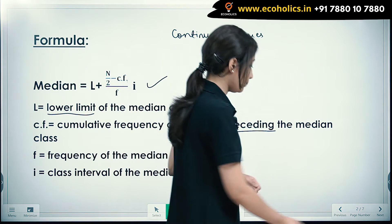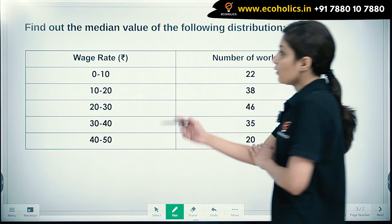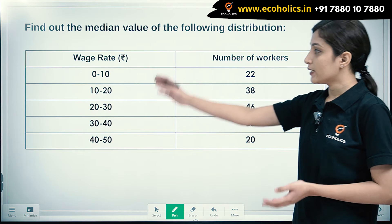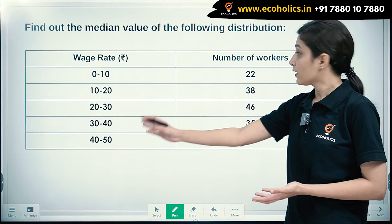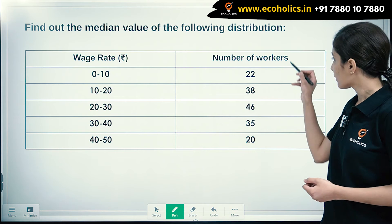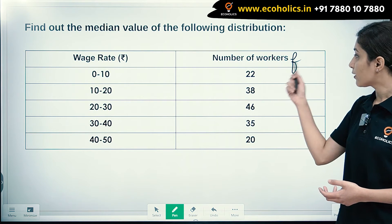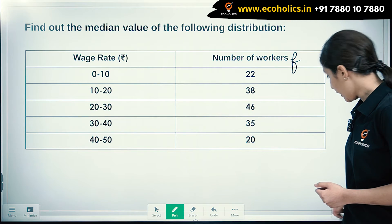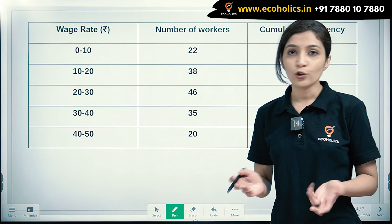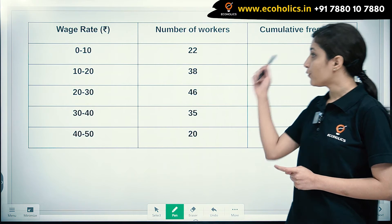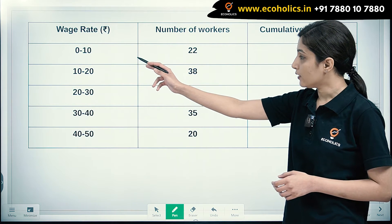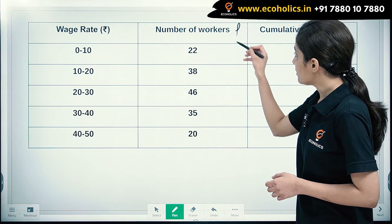Let's look at an example. The question is: find out the median value of the following distribution. Wage rates are given, which makes this our continuous series, and here we have the number of workers, which represents our frequency.